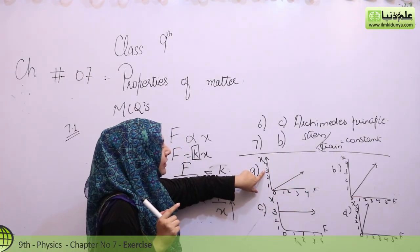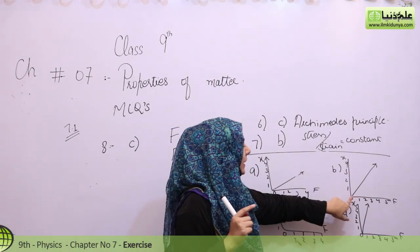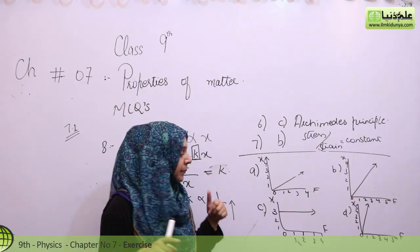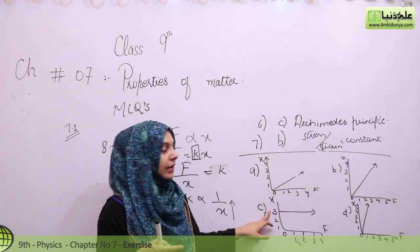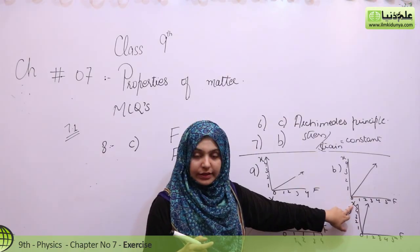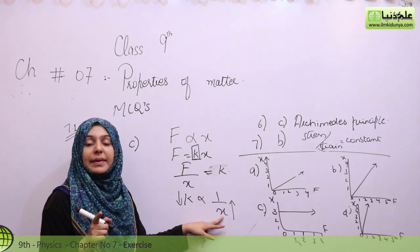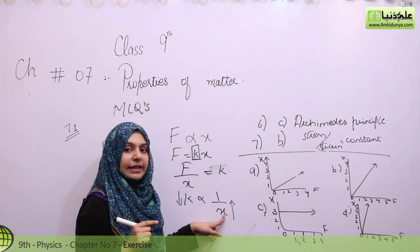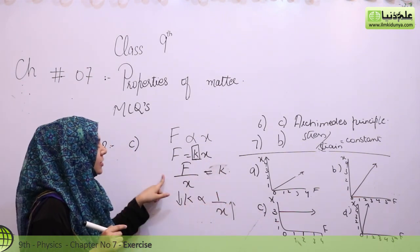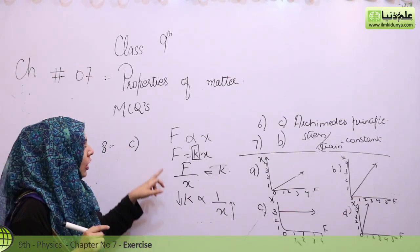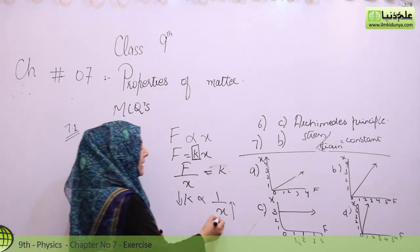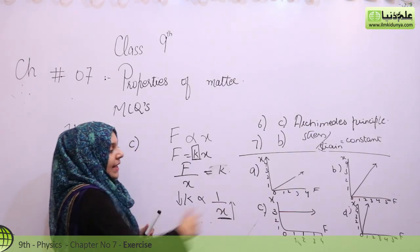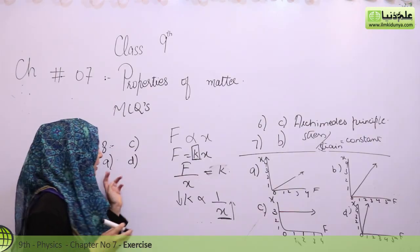From the graphs, graph D has the largest extension value X. Since K and X are inversely proportional, the largest X gives the smallest K. Therefore, the right option for Question 9 is D — graph D gives the smallest value of the spring constant.